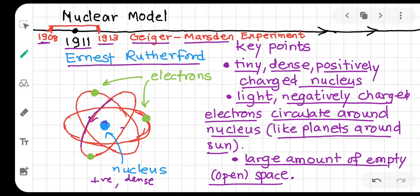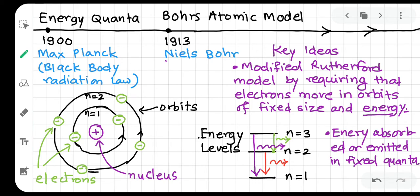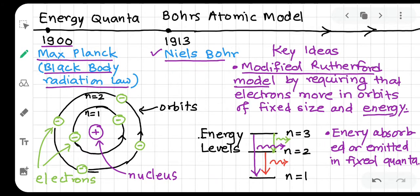Rutherford's model is very important and is still used to explain many things. However, advances in classical mechanics and electromagnetic theory showed that accelerating charges radiate energy — meaning Rutherford's orbiting electrons should spiral inward and the atom should be unstable. But atoms are stable. This problem led Niels Bohr to work on a new atomic model.